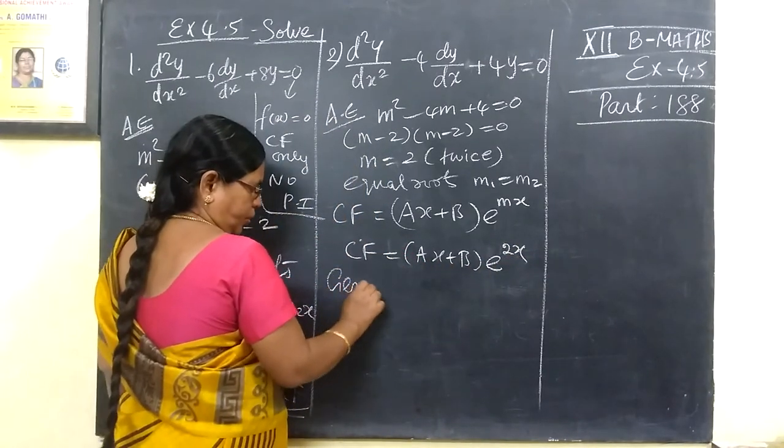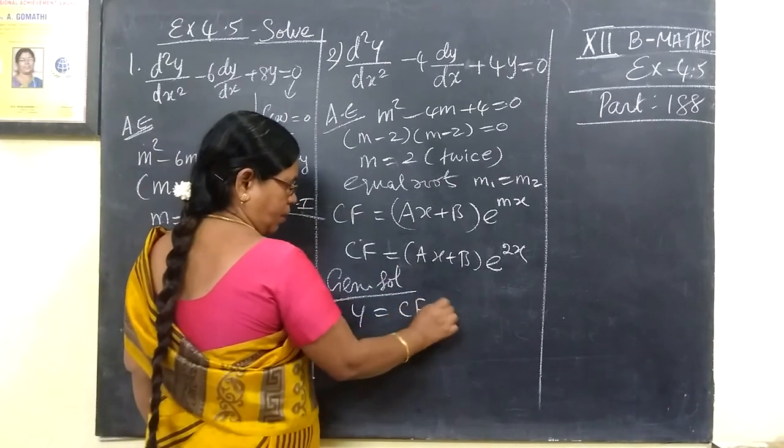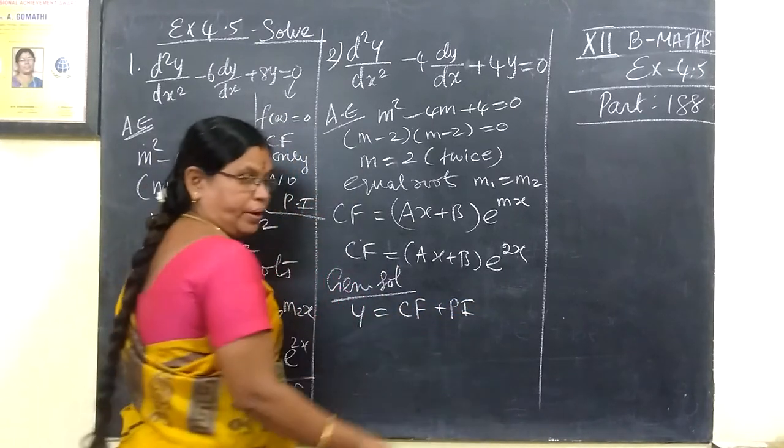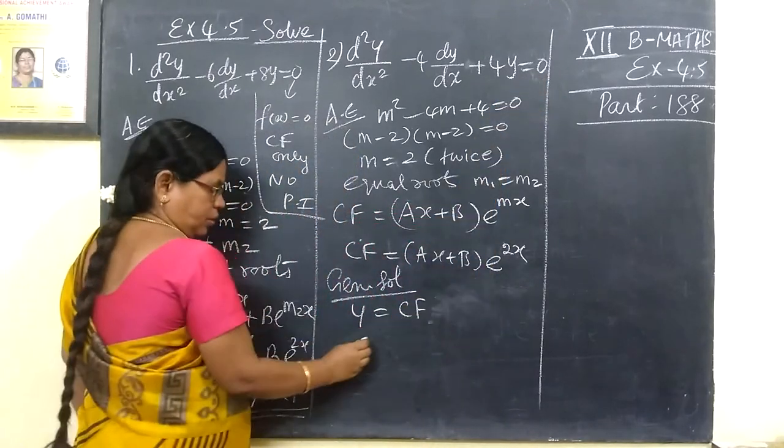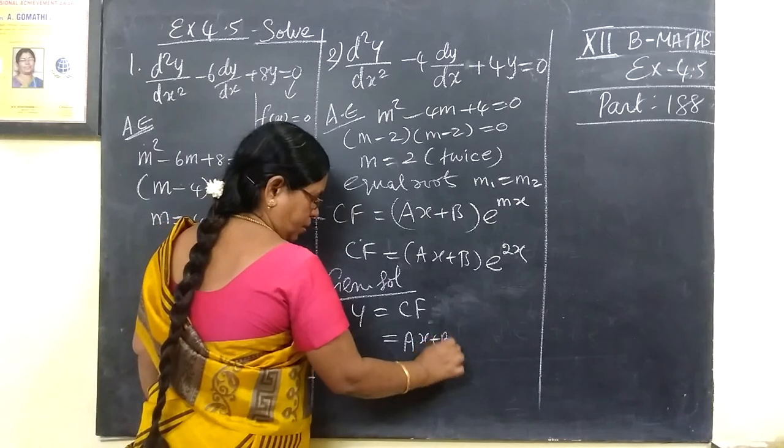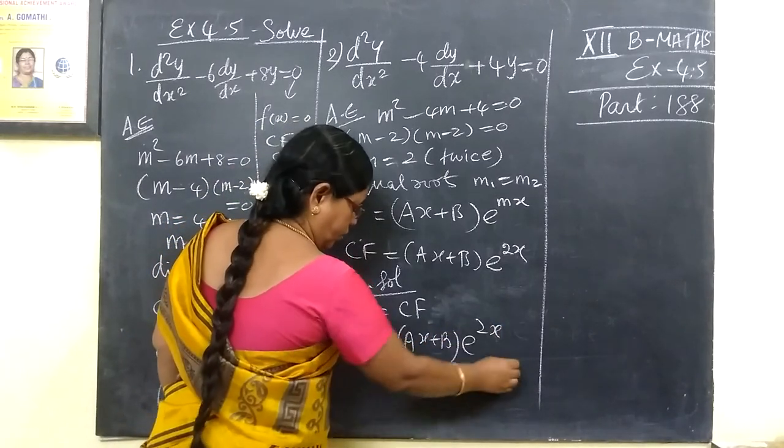Therefore, the general solution y equals CF, which equals (ax plus b) e power 2x.